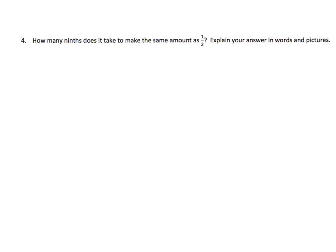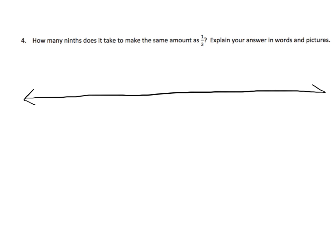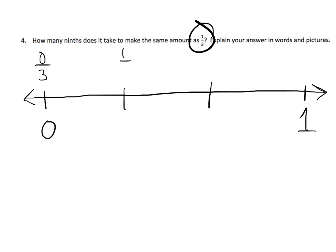And the last slide for this video: How many ninths does it take to make the same amount as one-third? Explain your answer in words and pictures. We're going to draw a number line. Since the big question is to make the same amount as one-third, let's draw a number line from zero to one and cut it up into thirds — zero-thirds, one-third, two-thirds, and three-thirds. How do we turn this into ninths? We turn it into ninths by cutting each third into three.